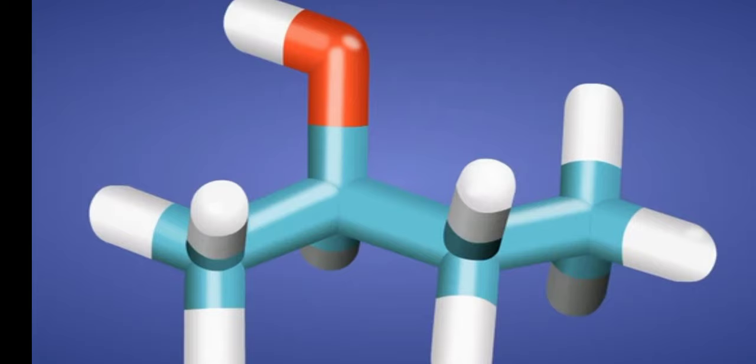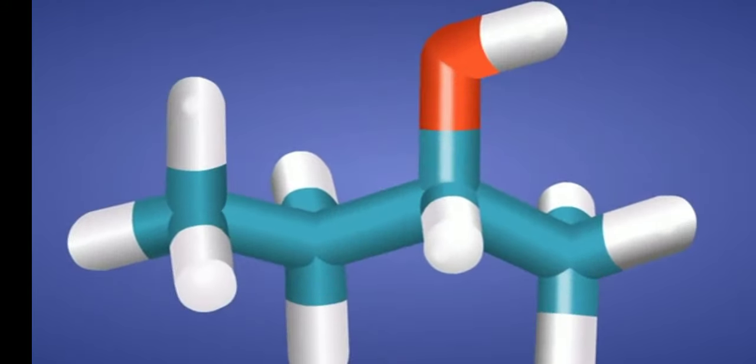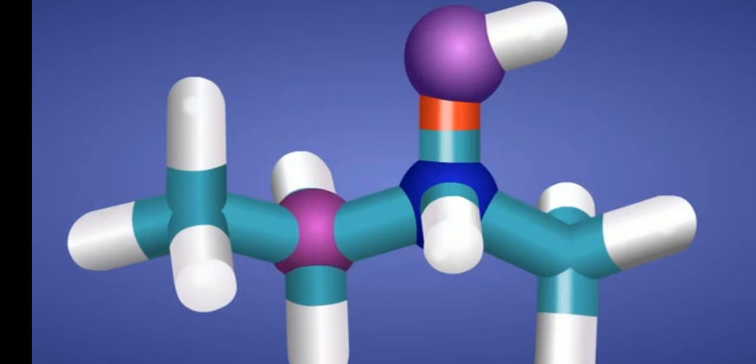In this molecule, the four atoms attached to the carbon atoms are not the same and hence propane 2ol is achiral. That is, the molecule and its mirror image are superimposable on each other.